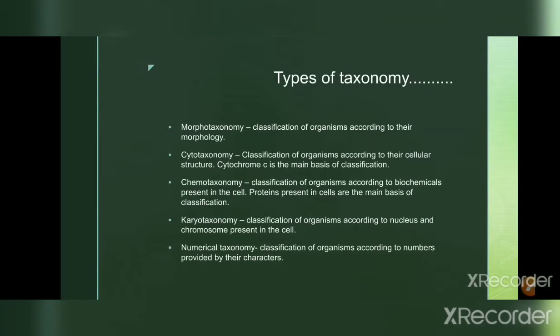Numerical taxonomy classifies organisms according to numbers provided by their characters. It is a branch of taxonomy that uses mathematical methods to evaluate observable differences and similarities between taxonomic groups.